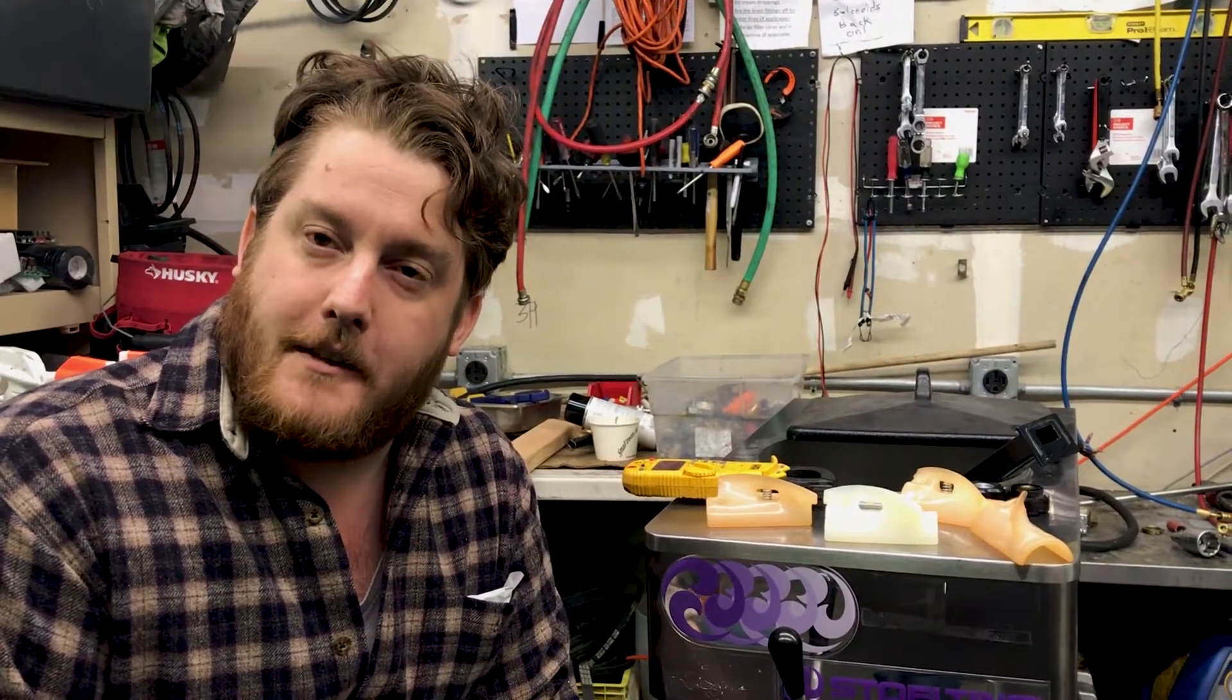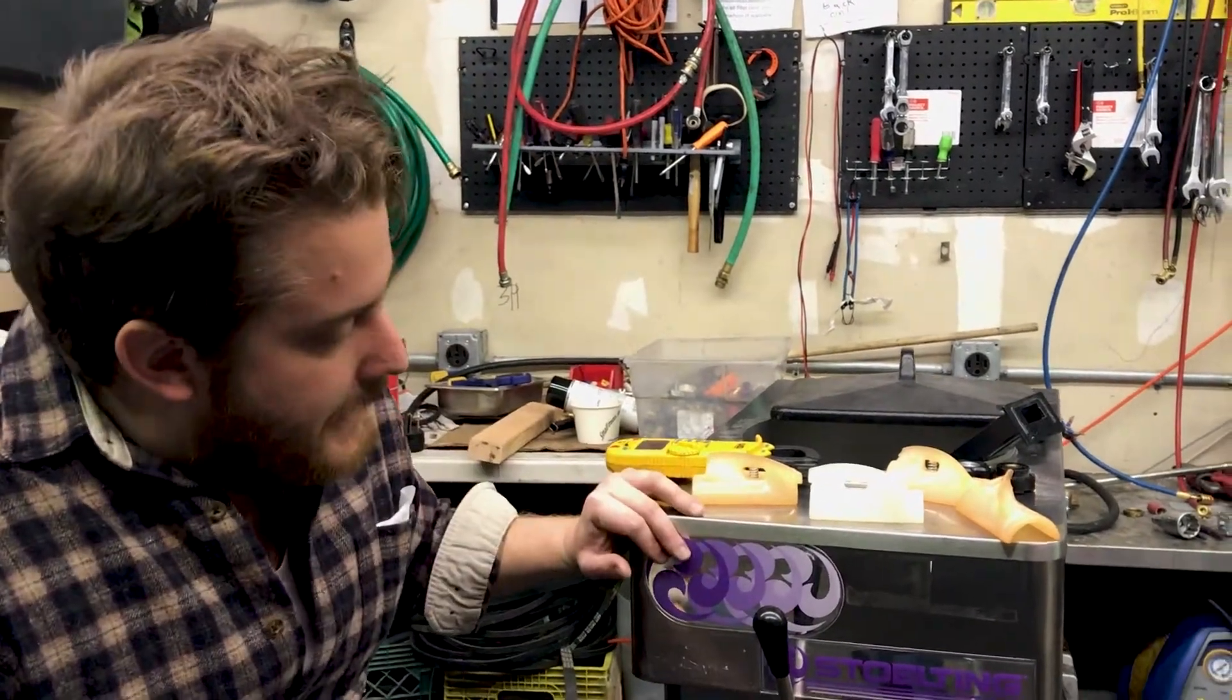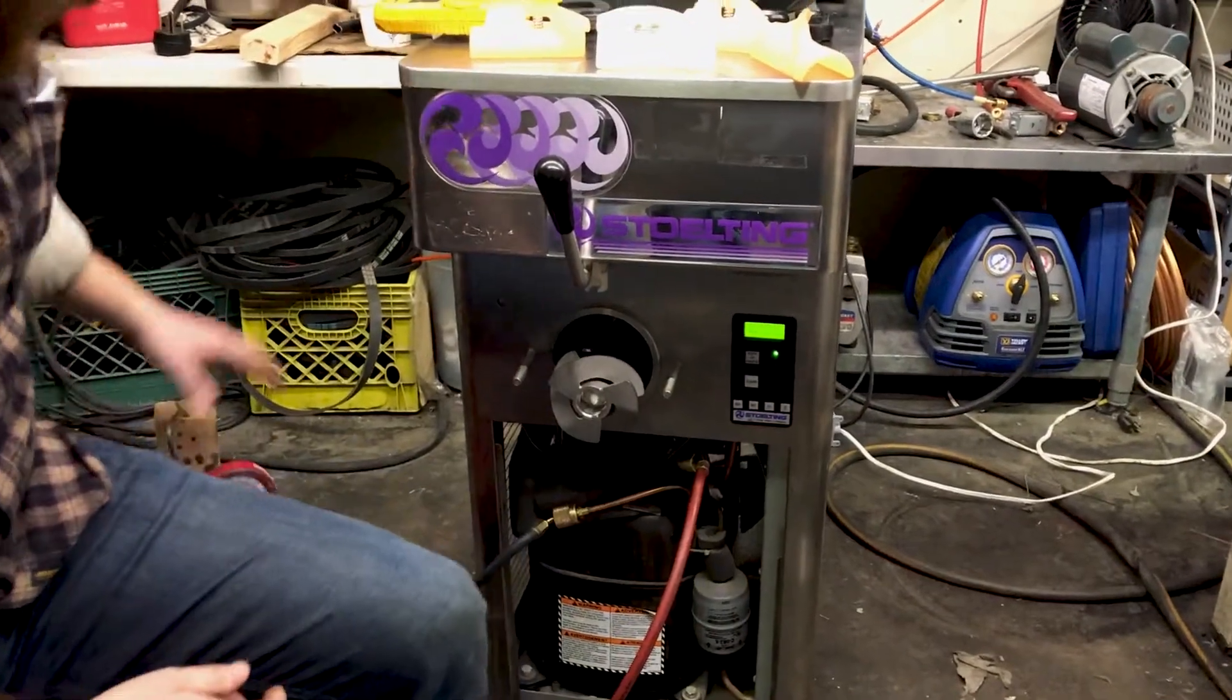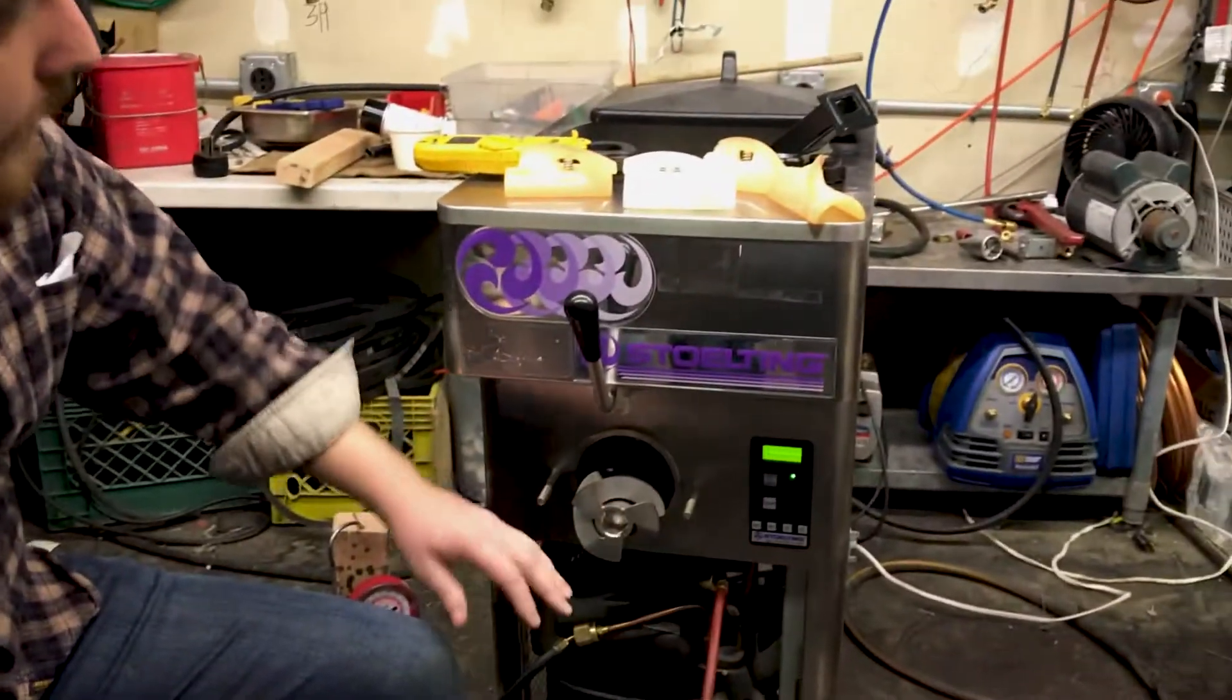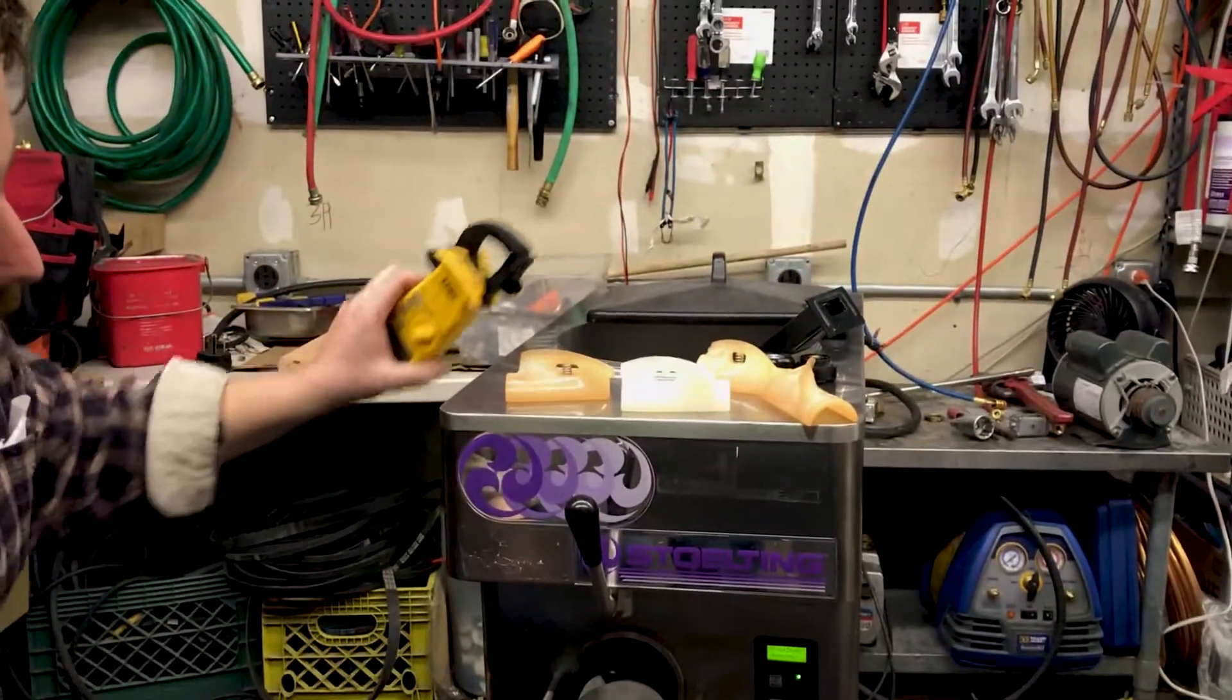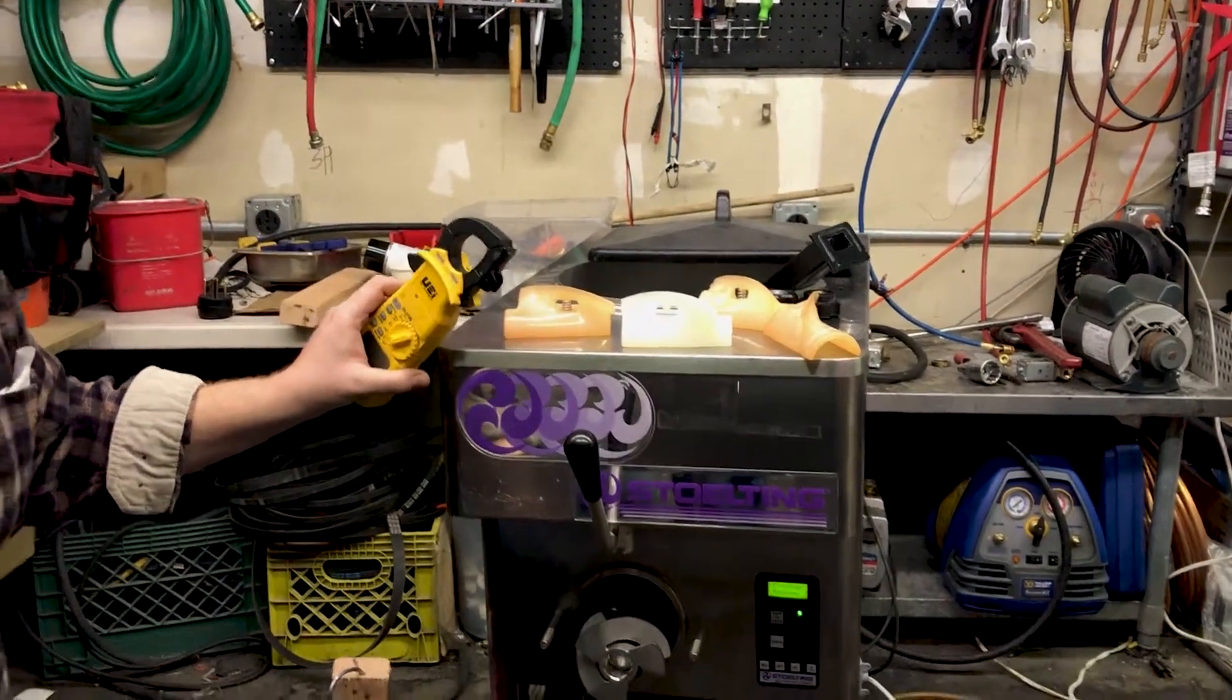Hey there ice cream friends, it's Evan with Slices Concession. Today we're doing an intake on this Stulting E11. It's a great 115 volt machine and currently we're checking the pressures to make sure they're good and checking the barrel and all the parts and making sure that all the electronic parts have the correct amperage on them.